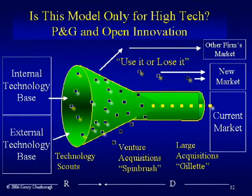This is not restricted to high-tech. Procter & Gamble in the consumer packaged goods space has also created a program of open innovation. They have a very strong group of technology scouts that go out and look for external ideas to bring into the company. They also do a lot with their unused patents to let others make use of them. So whether it's in high-tech or consumer packaged goods, open innovation is becoming a much more powerful force in how companies are doing innovation.